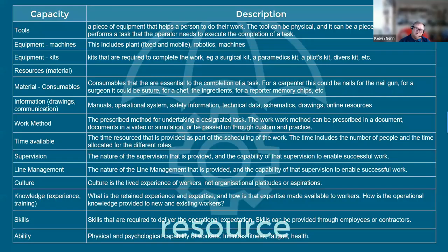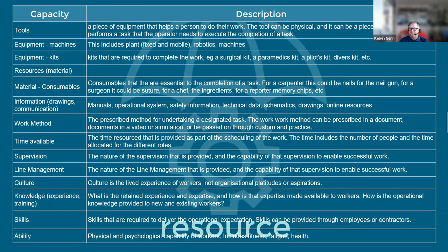This gives more detail around the nature of the capacities being looked at. For information, for example, we're talking about manuals, operational systems, safety information, technical data, schematics, drawings, online resources — and asking people how well those meet their needs. For supervision and line management, you're trying to understand: when people talk about their supervision, do they see it as there to help them be successful, to help them resolve problems and bridge gaps? Or does it actually put more barriers and problems in place that they're expected to resolve themselves?